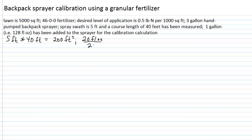We've applied 20 fluid ounces over 200 square feet. We're going to set up a proportion on a per-thousand-square-feet basis, since we almost always work in thousand-square-foot units for backpack or spray gun calibrations. So: 20 fluid ounces is to 200 square feet as x fluid ounces is to 1,000 square feet. With proportions, as long as the units on top and bottom match on either side, it's a legitimate proportion. Cross multiply and divide to solve for x.